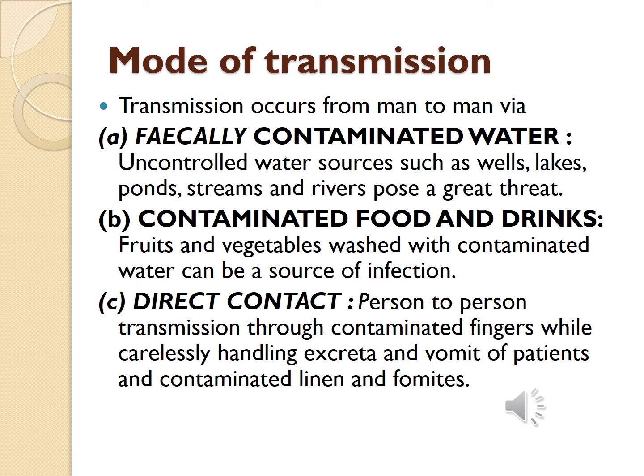For contaminated water, uncontrolled water resources such as wells, lakes, ponds, streams, and rivers pose a great threat. Regarding contaminated food and drinks, fruits and vegetables washed with contaminated water can be a source of infection, and bottle feeding can also pose a significant risk for infants. Additionally, cooked food may be contaminated through contaminated hands and flies. For direct contact, person-to-person transmission through contaminated fingers may occur while carelessly handling excreta and vomit of patients, or via contaminated linens and fomites.